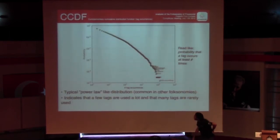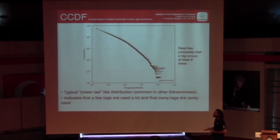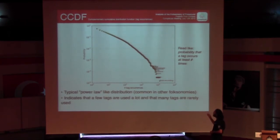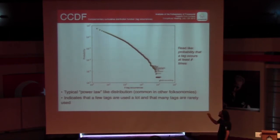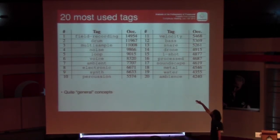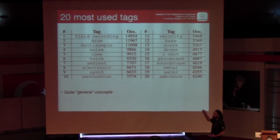To have an idea of the distribution of the frequencies of occurrence of tags — how many times each tag is used — this is the complementary cumulative distribution function. It's a kind of power-law distribution, which is often observed in many of these studies and in other folksonomies. Basically what it means is that there are a few tags that are used a lot of times, and there are a lot of tags which are rarely used. This is the list of the most used tags, and in general they are quite general concepts that can be applied in many different contexts.